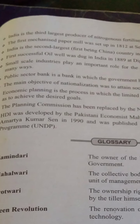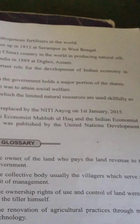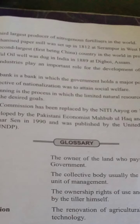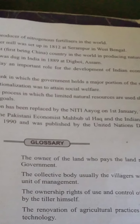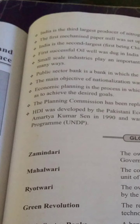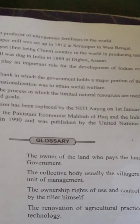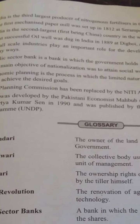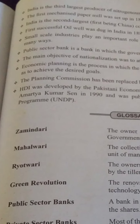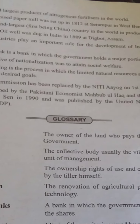Public sector bank is a bank in which the government holds a major share — the government holds 51% share, so that is why it is a government bank. Private bank means 51% private. The main objective of nationalization was to attain social welfare, whereas private banks focus on economic planning.